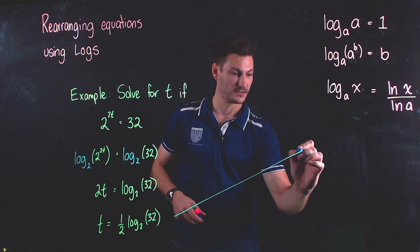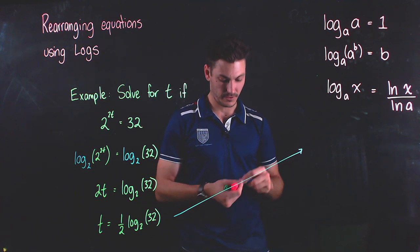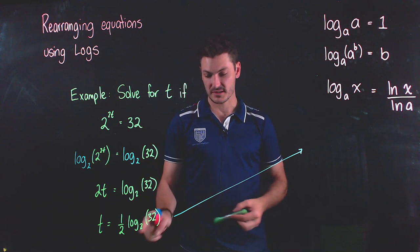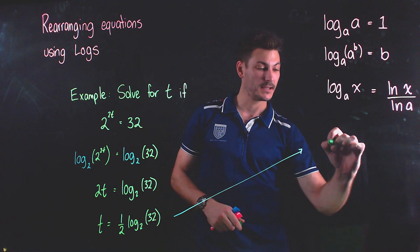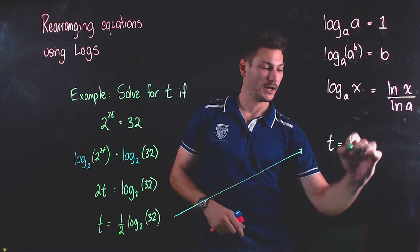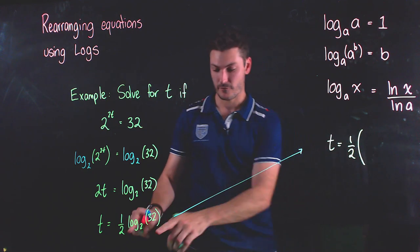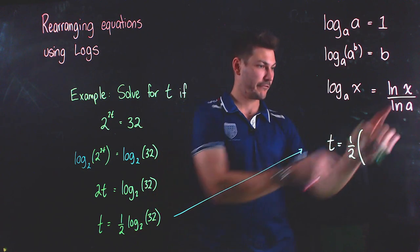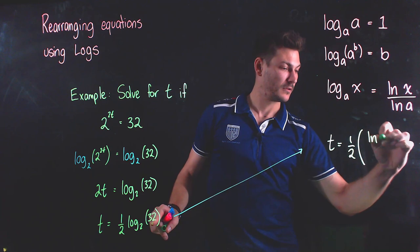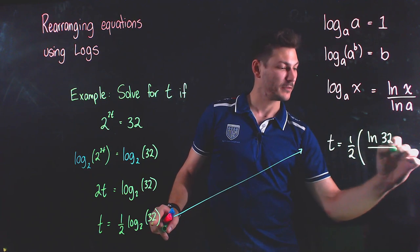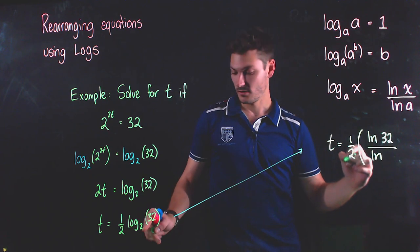And we're going to use that law to continue this one here. I'm going to move this one across so I've got a bit of board space to continue solving, and I'm going to represent log base 2 of 32 in this form. So I'm going to get t equals one half, and now I'm going to use brackets because it's one half of all this, so my fraction here is going to be ln of 32 divided by ln of 2.